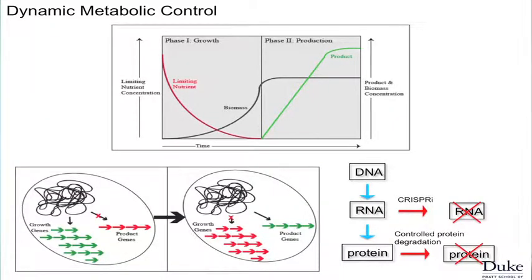We're doing this with technology we call dynamic metabolic control. The black line represents the number of bacteria or yeast — the amount of biomass — which grows over time as they eat sugar and other things. One of those nutrients becomes limiting, and we use the exhaustion of that nutrient as a cue to turn over their metabolism — turning on the enzymes and pathways required to make the desired product.